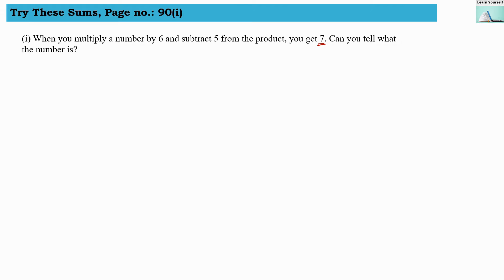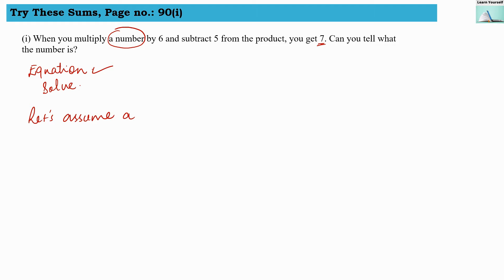First we are going to write an equation and then we are going to solve it to find out the number. Let us first try to frame an equation from the given detail. We do not know the number, so let us assume the number equals to x. Whatever they have said here, a number that we are assuming is x.